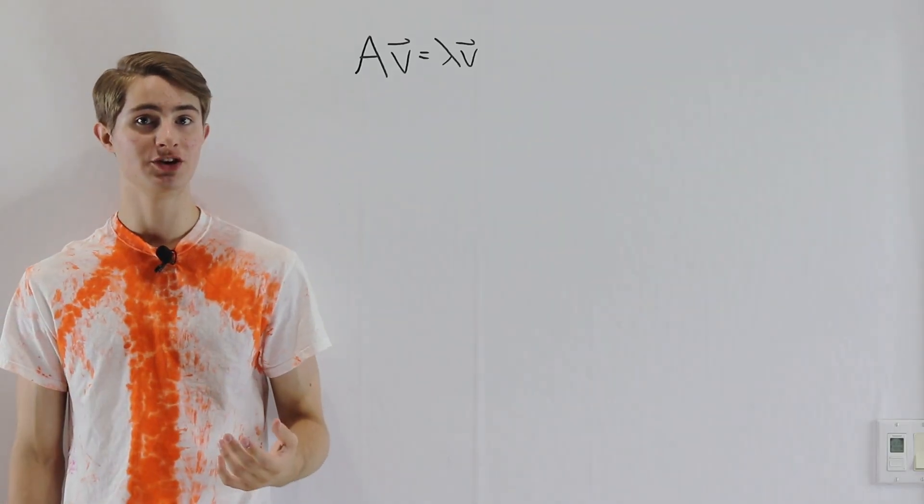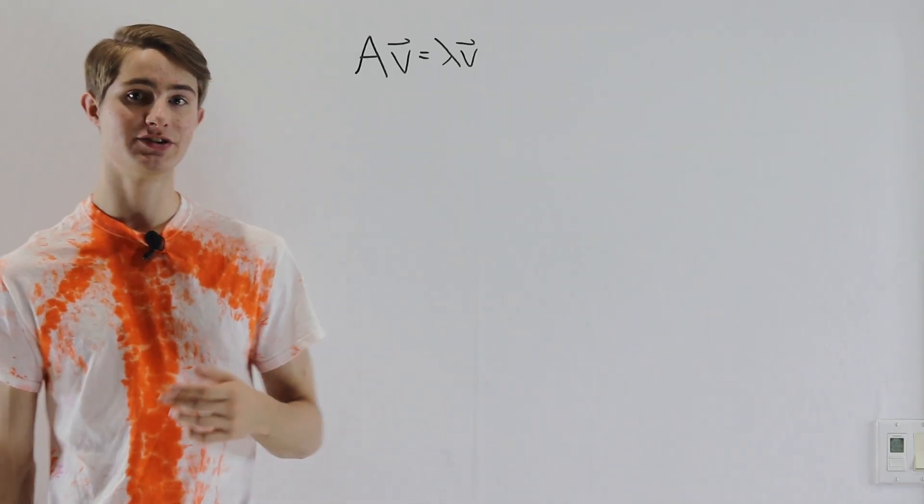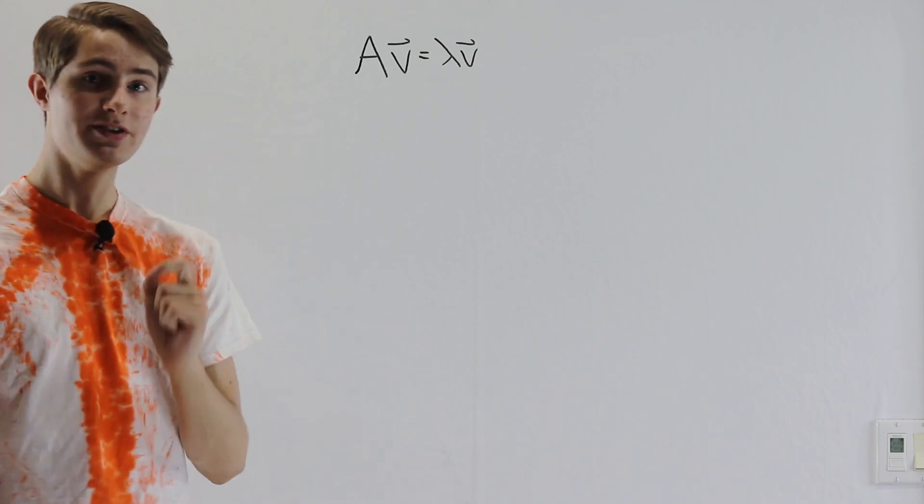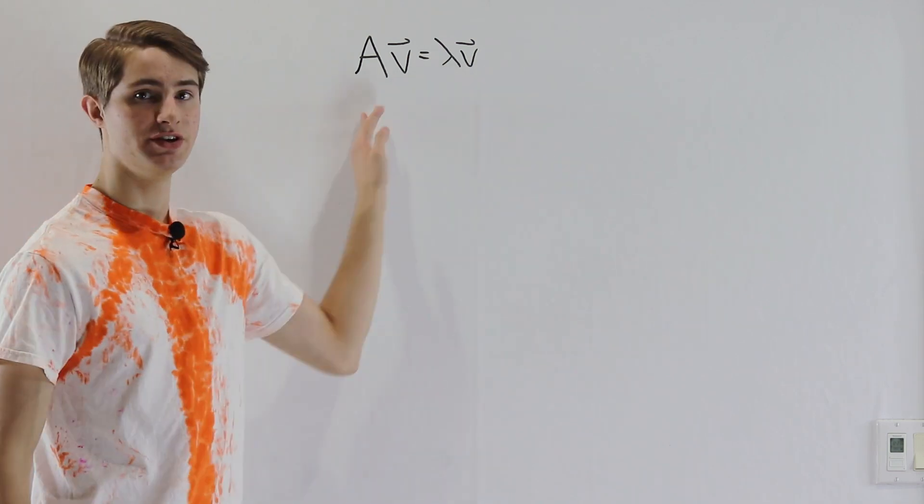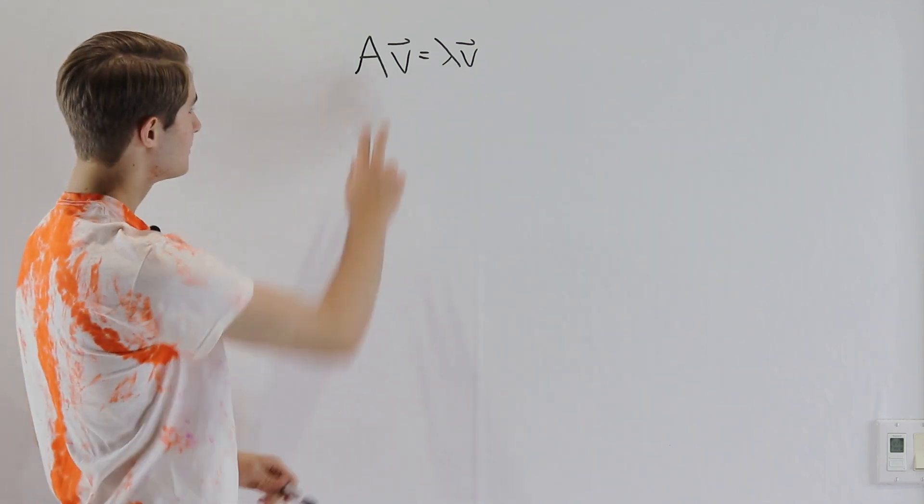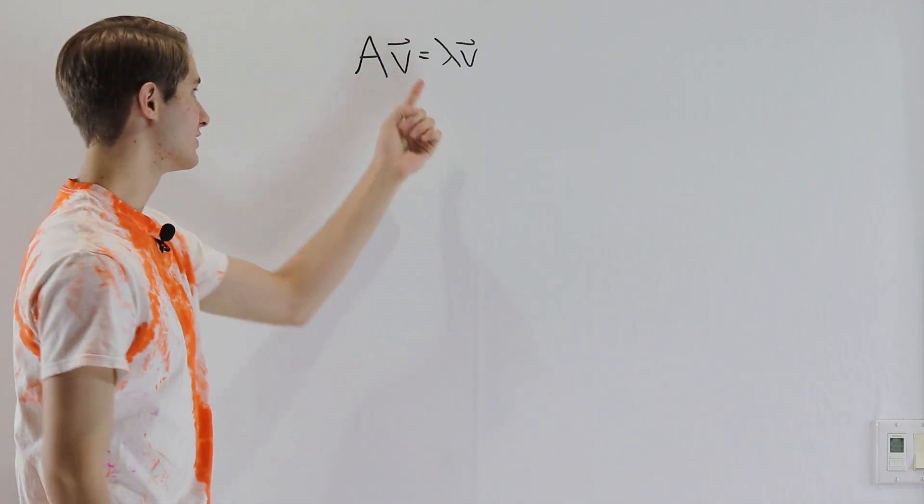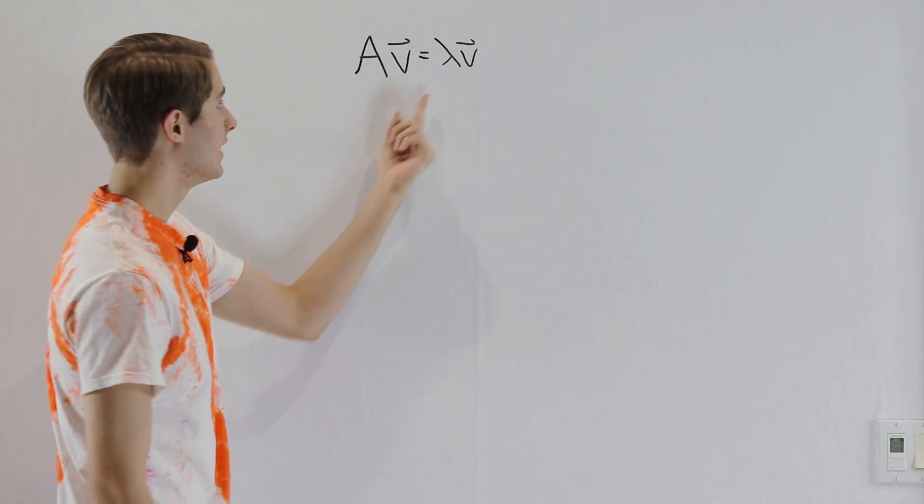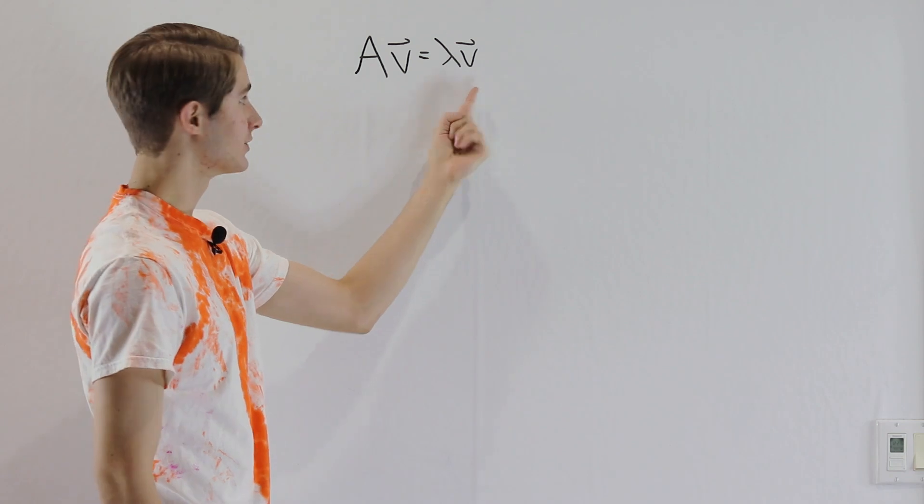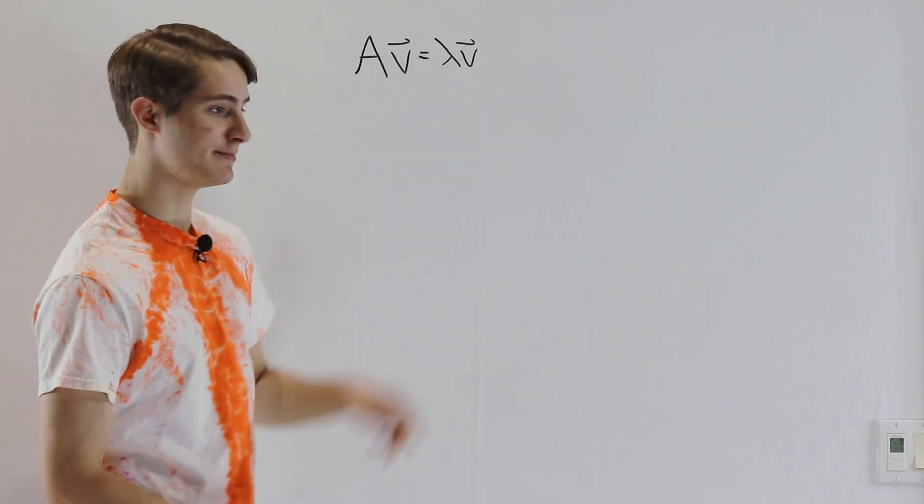Today I'm wearing my vector shirt because we're going to be talking about eigenvectors and eigenvalues. The definition of an eigenvector is this statement right here, where it says for some matrix A, V is an eigenvector if applying the matrix has the same effect as scaling the vector by some constant number, lambda.